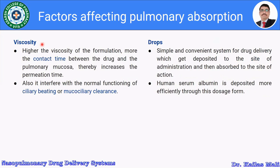Let us see how viscosity of the formulation affects pulmonary absorption. Higher viscosity of the formulation increases the contact time between the drug and the pulmonary mucosa, thereby increasing the permeation time. The formulation is retained in the pulmonary mucosa for a sufficient period due to high viscosity. It also interferes with the normal functioning of ciliary beating or mucociliary clearance, thereby increasing the pulmonary absorption of the drug.